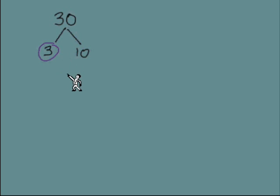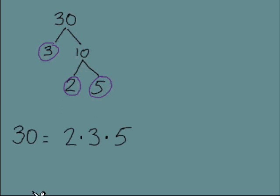So we'll just throw a circle around the 3 and that's a dead end. But the 10, we can break that up further as a 2 times 5. The 2 is a prime number and the 5 is a prime number and there's nothing left to break down. So these dead ends are the prime numbers, the prime factors of 30. So we can write that 30 equals 2 times 3 times 5.